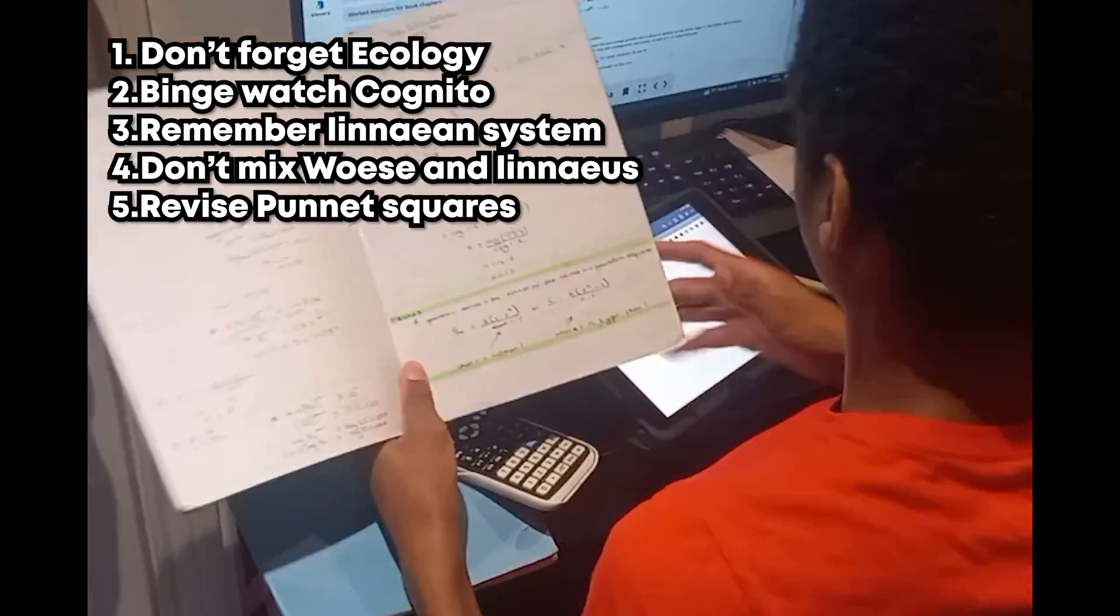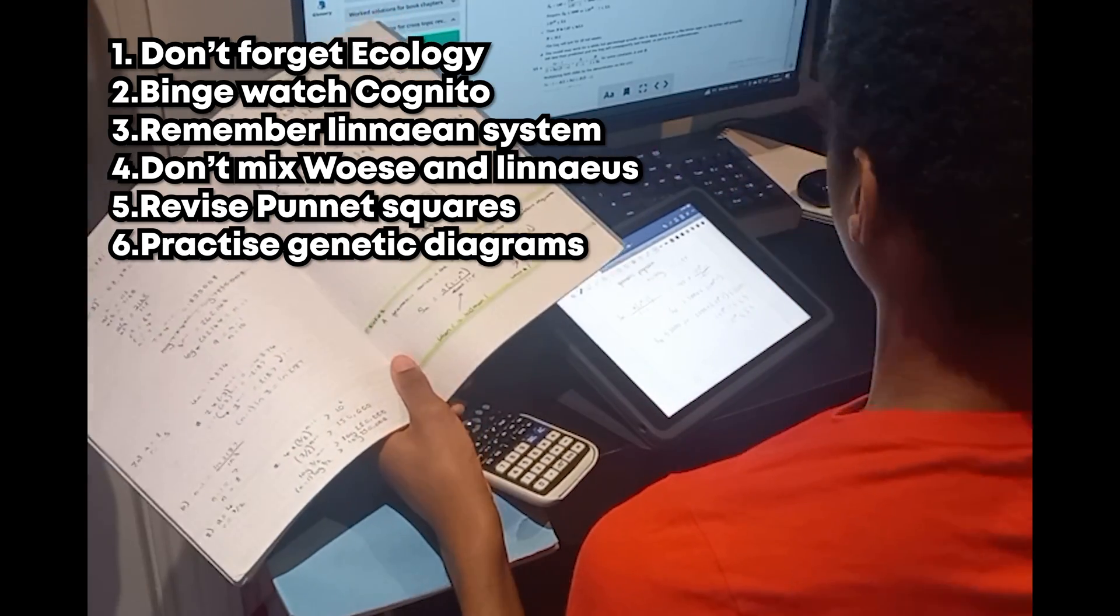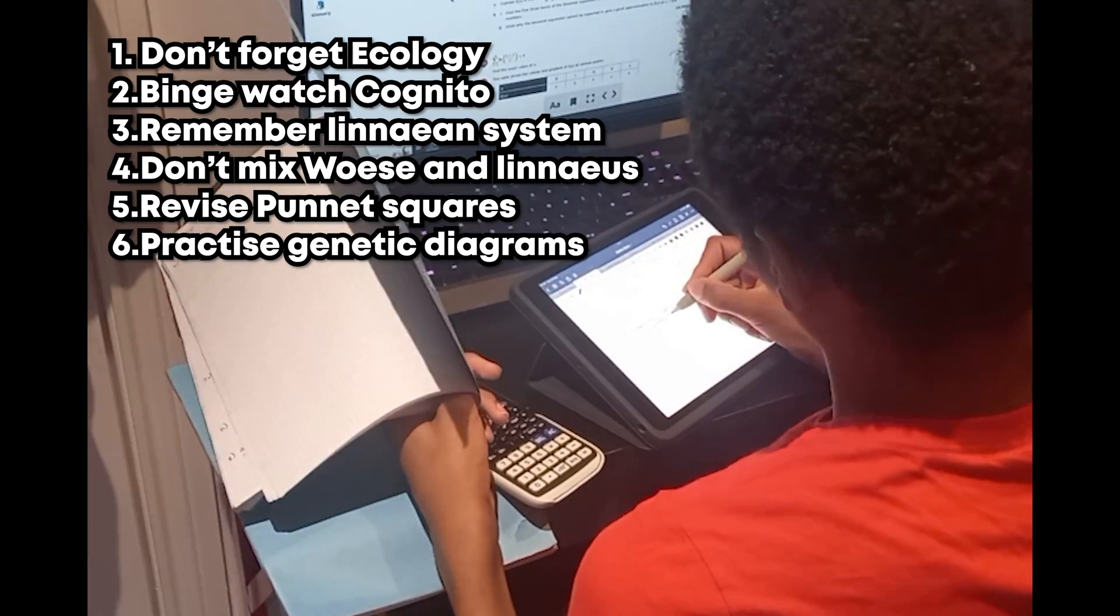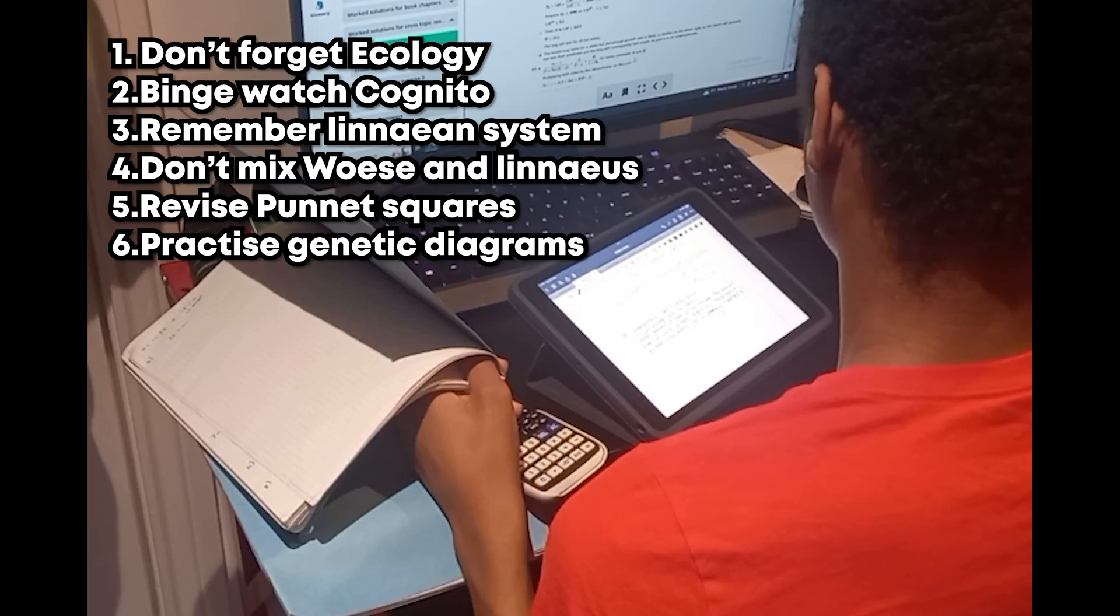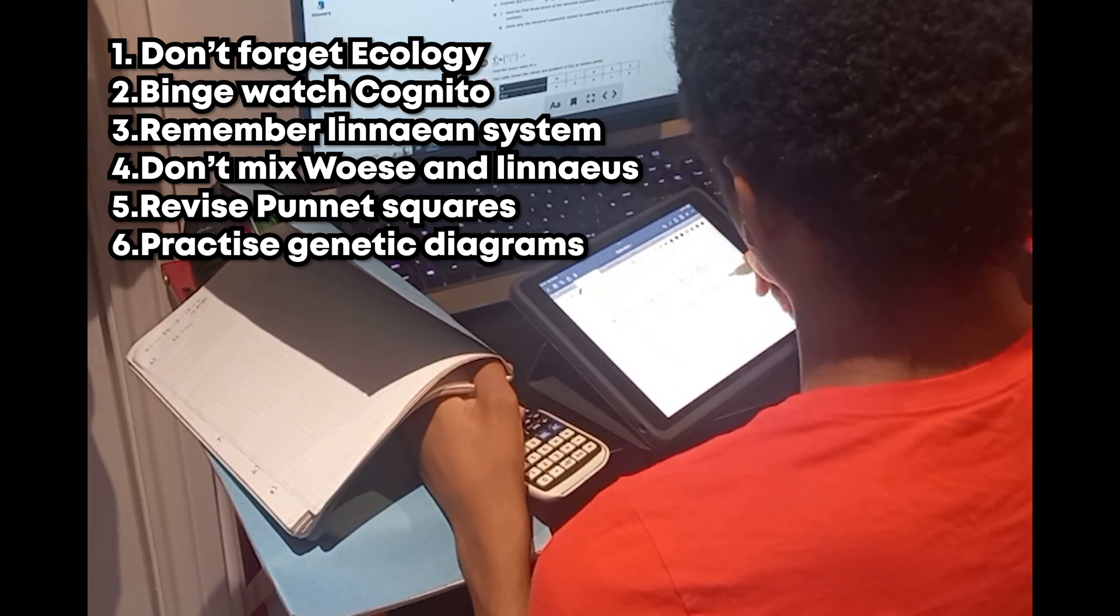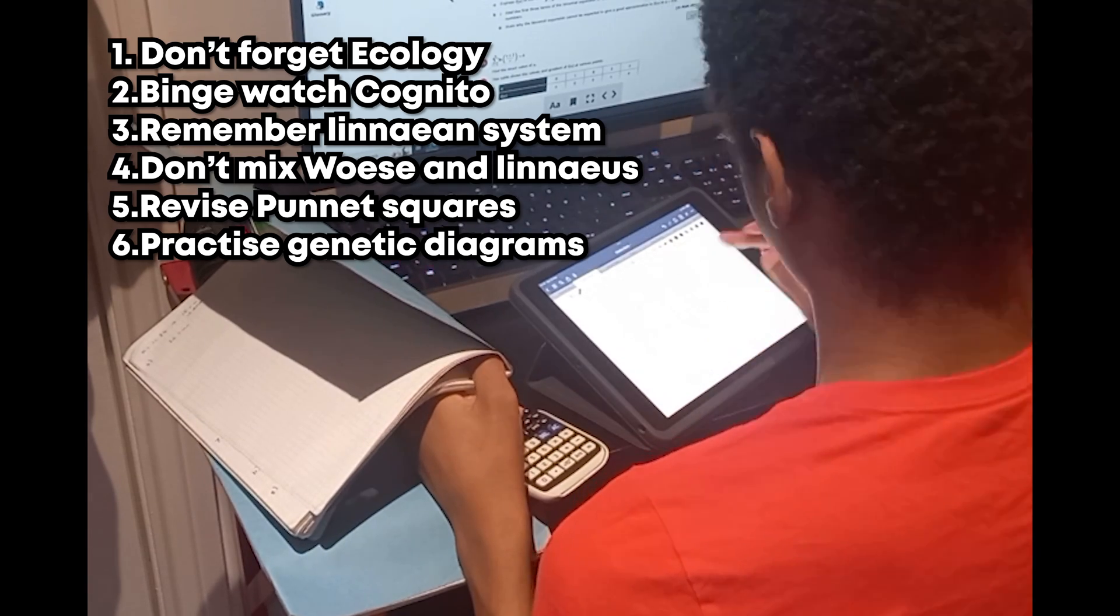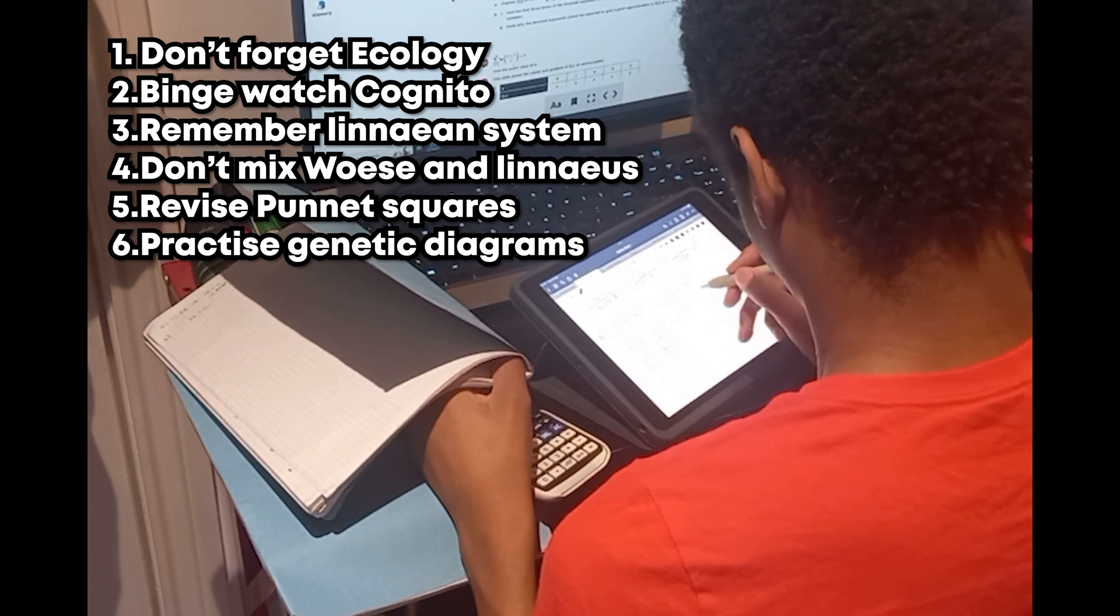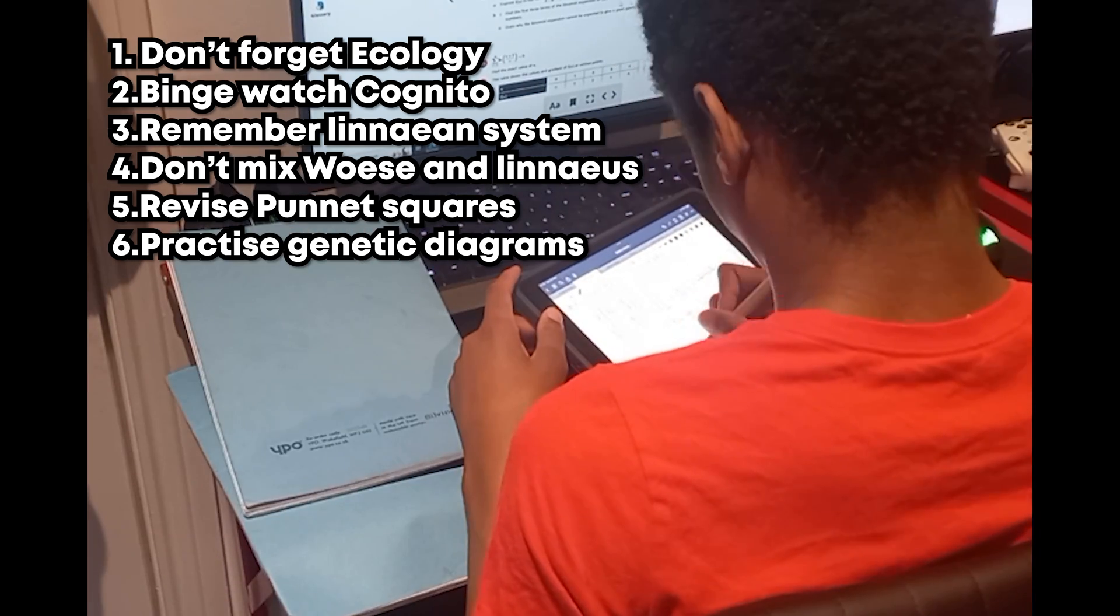My sixth tip is that genetic diagrams were always really difficult for me and a lot of my friends, so instead of trying to learn how they work, I suggest you find and do some questions on them instead to practice them. I can't remember if it came up in my GCSE biology exam last year or not, but if it had, I would not have done well on that question because I was constantly trying to learn specifically how to do them rather than just practicing over and over again and then just getting good at it through that way.